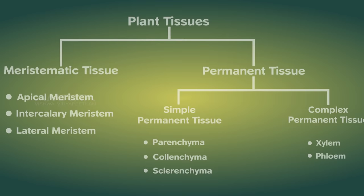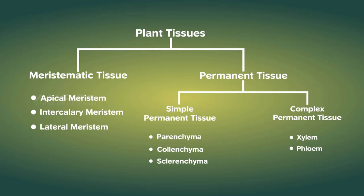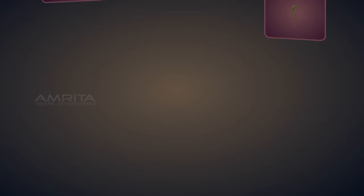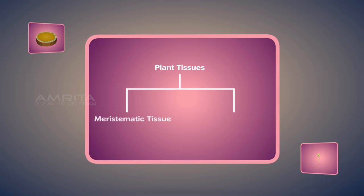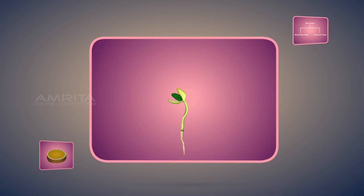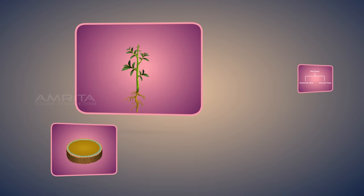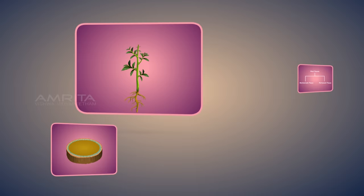In conclusion, we have seen and understood the plant tissues. Plant tissues are basically classified into meristematic and permanent tissues. Meristematic tissues divide throughout their life and promote plant growth. Permanent tissues are derived from meristematic tissues and facilitate transport, preparation of food and provide support to plants.